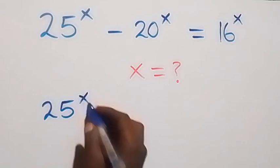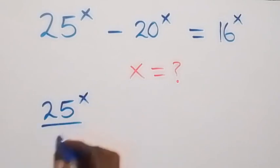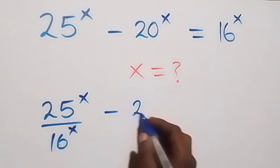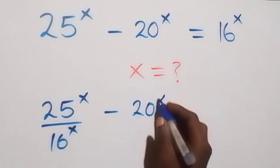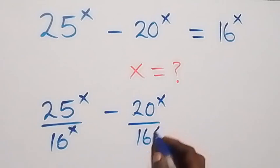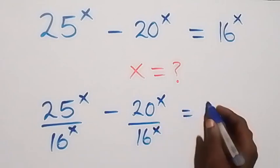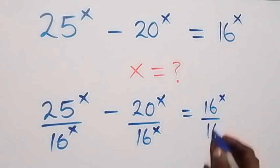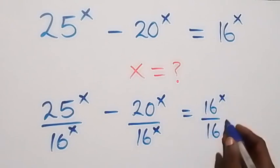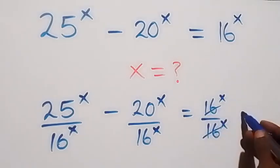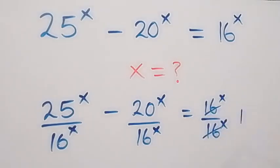25 raised to power x divided by 16 raised to power x, minus 20 raised to power x divided by 16 raised to power x, equals 16 raised to power x divided by 16 raised to power x. From here, these cancel each other and we have 1 left.